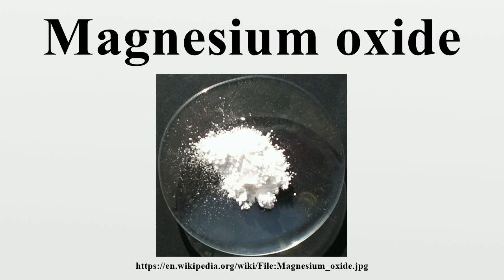Magnesium hydroxide forms in the presence of water, but this can be reversed by heating to separate moisture. Magnesium oxide was historically known as magnesia alba, to differentiate it from magnesia negra, a black mineral containing what is now known as manganese.